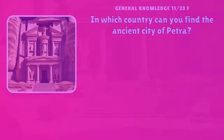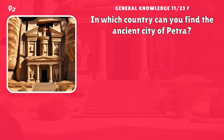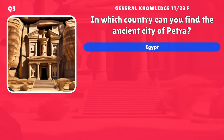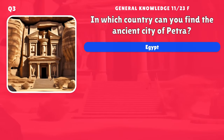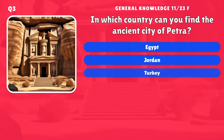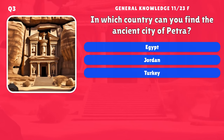In which country can you find the ancient city of Petra? A) Egypt, B) Jordan, C) Turkey, D) Greece.